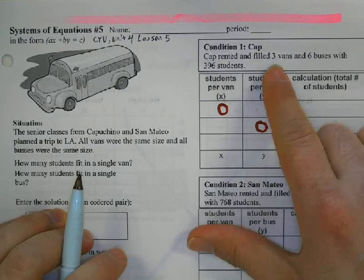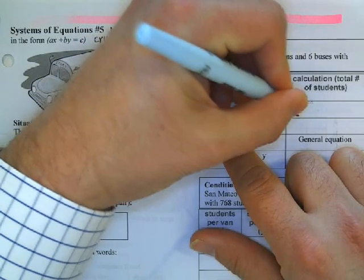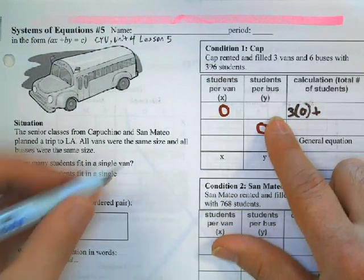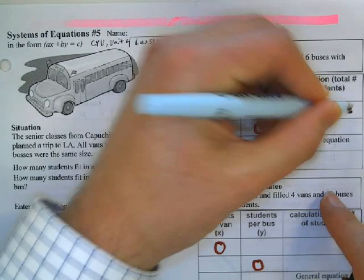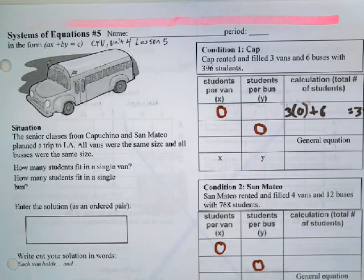In this situation, if I had zero students in a van, I have three times zero, and I have six buses. So the question is, how many students would we need to put in each bus?